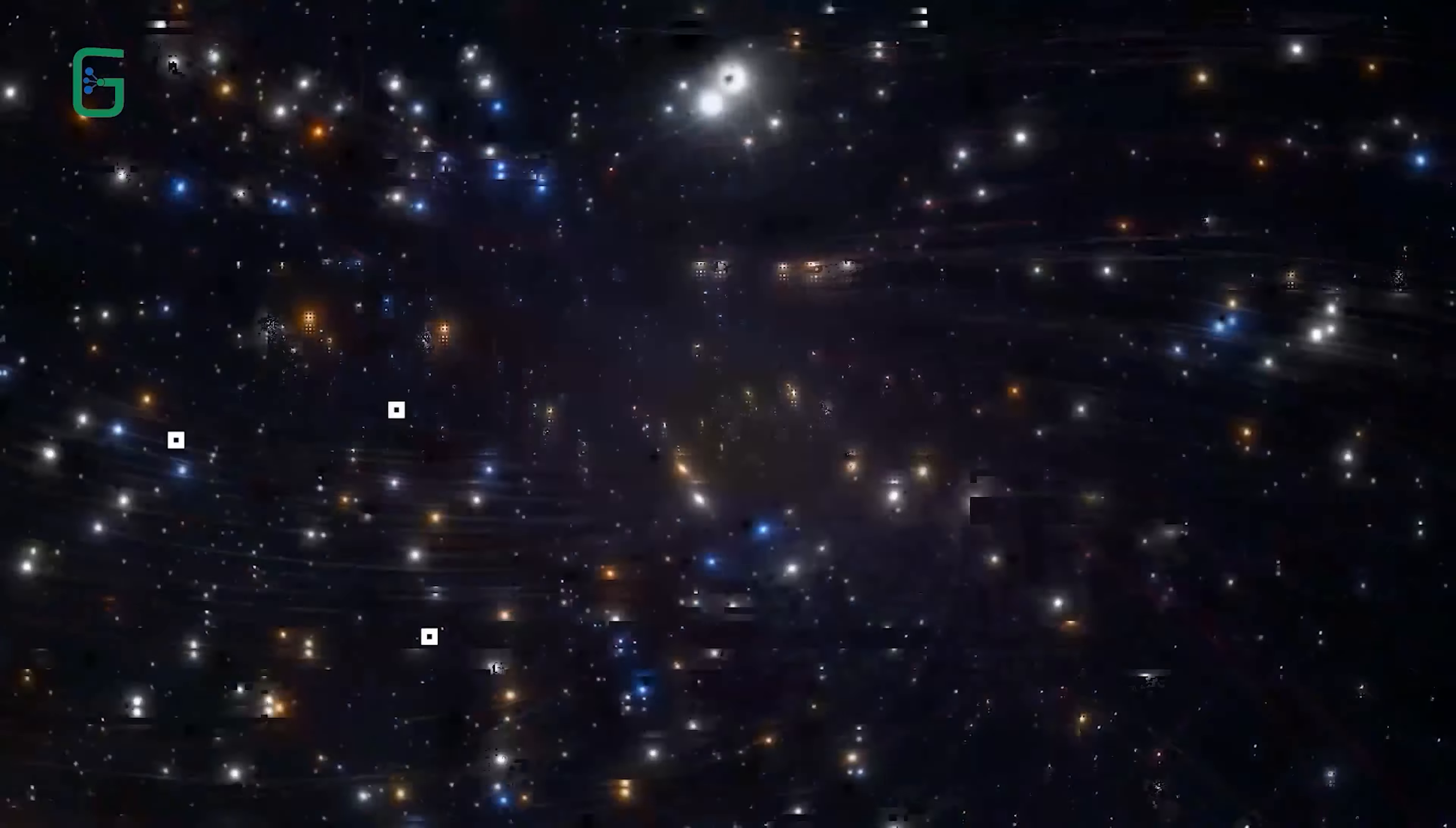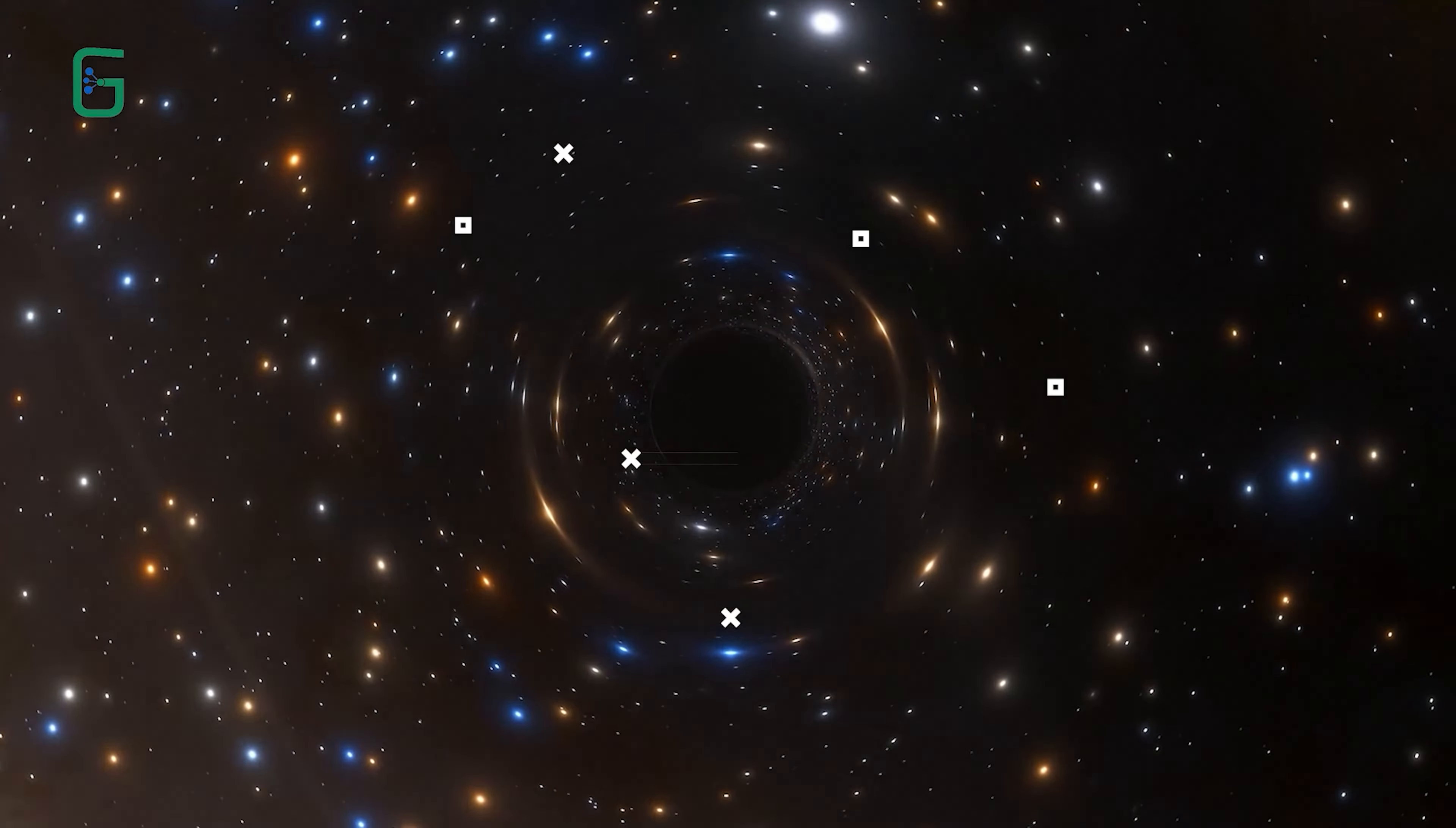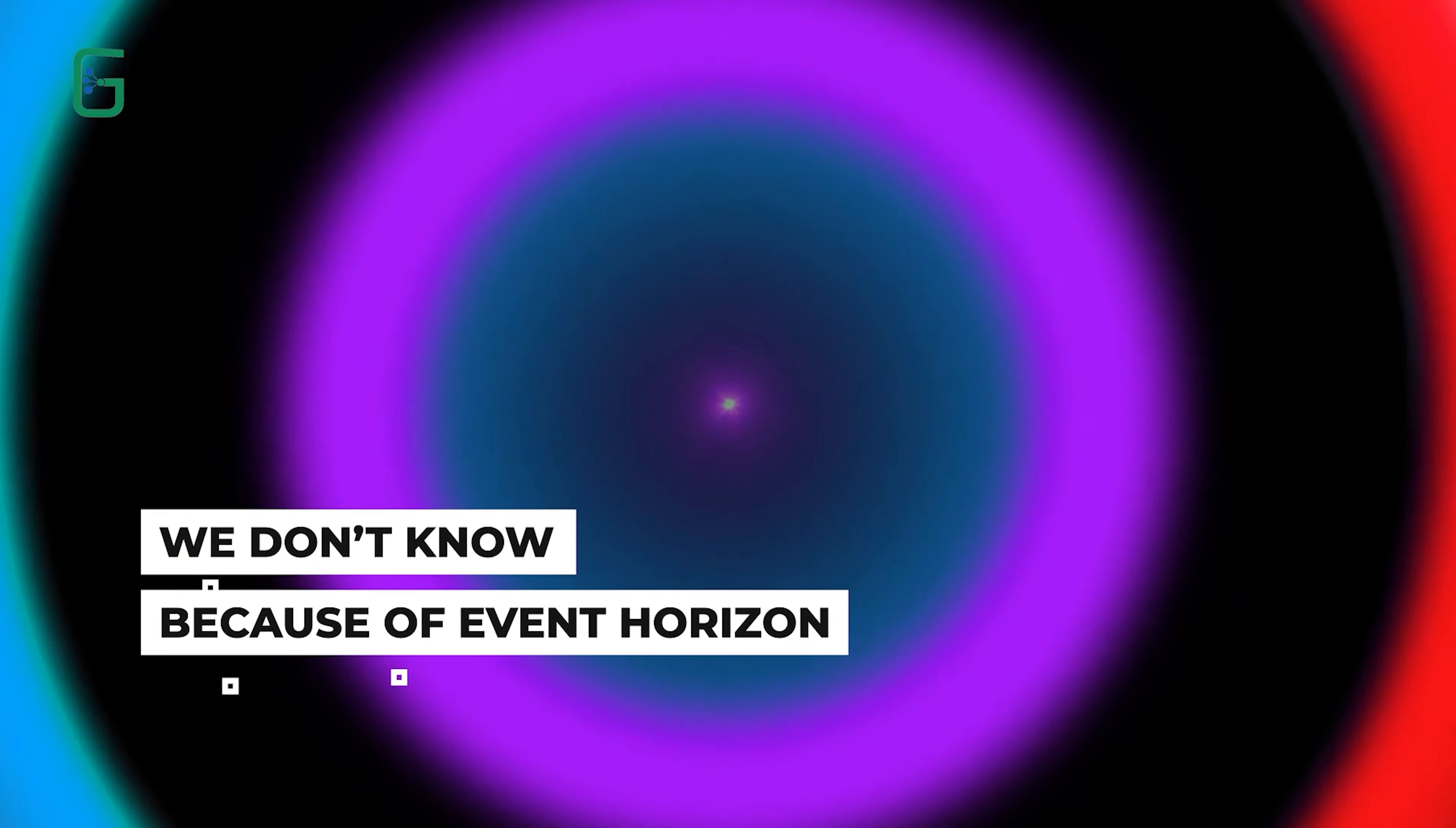When you see an image of a black hole, the black sphere you are looking at is not actually the black hole itself. Scientists theorize a black hole's true form is probably even smaller and denser than a neutron star. In fact, it is likely infinitely small and infinitely dense, a singularity emitting forces that warp time and space itself. However, we don't know. And the reason we don't know is because of something called the event horizon.